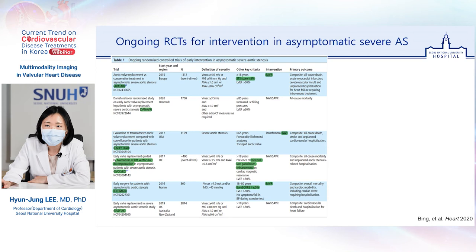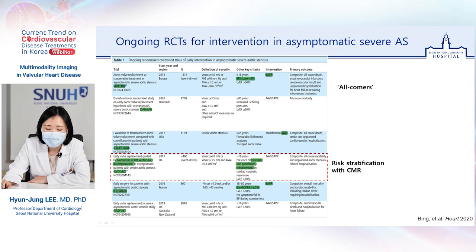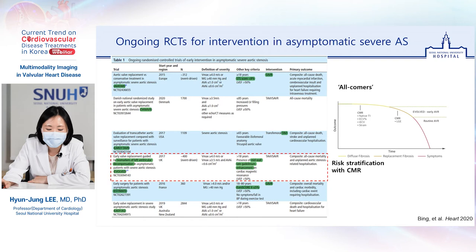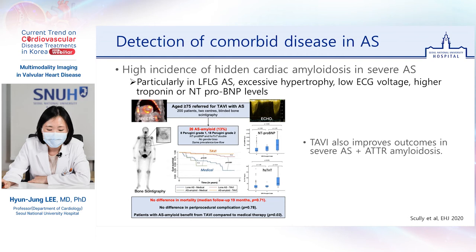Currently, many randomized controlled trials are ongoing to investigate whether early intervention is beneficial in asymptomatic severe AS, and most of the studies enroll all-comer severe AS patients. One of these trials is the EVOLVED trial, which is enrolling patients with LGE on CMR. The results will show us whether risk stratification with CMR will be useful to decide whether early intervention in asymptomatic patients with severe AS is beneficial.